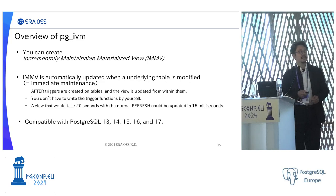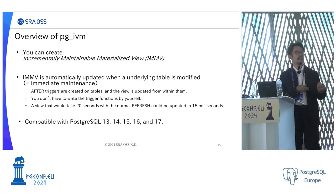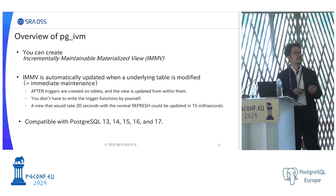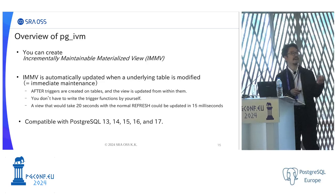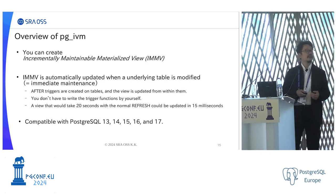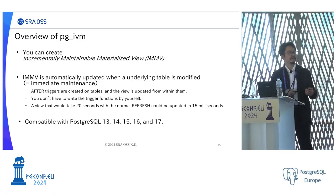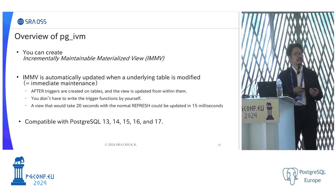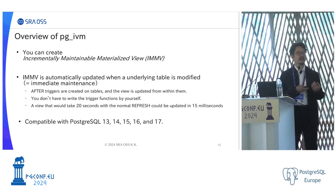I'll explain the overview of the PGIVM feature. Using PGIVM, you can create an incrementally maintainable materialized view — we call this IMMV. An IMMV created by PGIVM is automatically updated when an underlying base table is modified. This is called immediate maintenance.